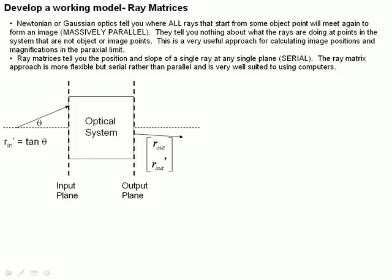And this is a highly serial approach. If we want to know what a lot of rays are doing, we need to run each of them through the system individually. But it gives us a lot more power to know what the rays are doing at any point in the system by defining our system matrix for what we want to look at.